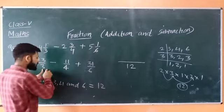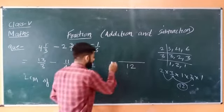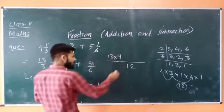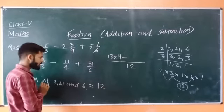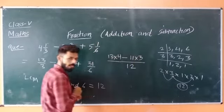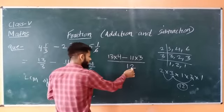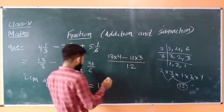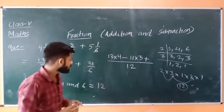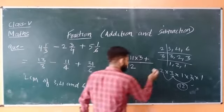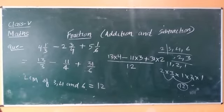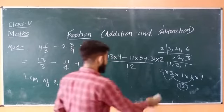Now, divide 12 by 3 to get 4, then multiply: 13 × 4 = 52. The sign after that is negative, so we put a minus sign. Divide 12 by 4 to get 3, then multiply: 11 × 3 = 33. Then divide 12 by 6 to get 2, and the sign is plus. Multiply: 31 × 2 = 62. Please pause the video and verify the multiplication.